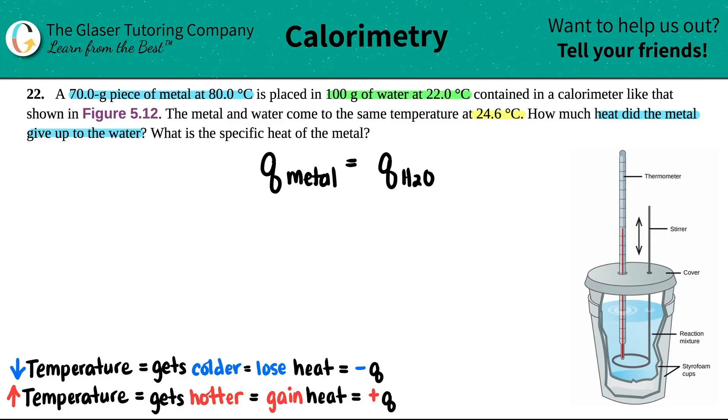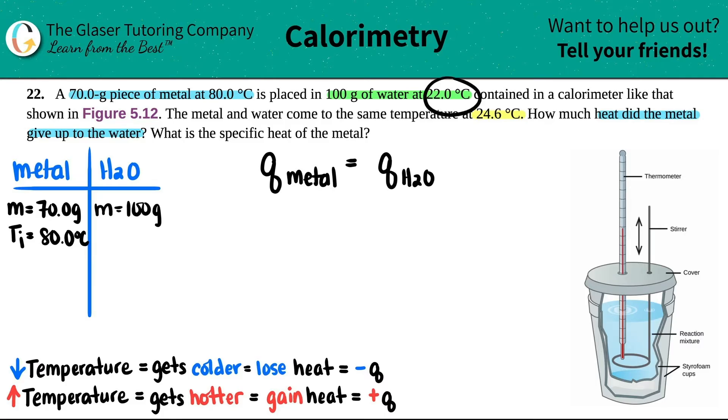That's how we're going to figure that out, is just do a little chart. I'm going to say that I have metal and then I do this little chart here and we got H2O. Now I just list out whatever they told me. They told me that the metal was 70 grams, so I'm going to say that that's an m, so that's 70.0 grams. And the metal was at 80 degrees Celsius, so that was its initial temperature, so Ti for the metal was 80 degrees Celsius. And now they told us that for the water, the mass was 100 grams and the water was at 22, right? That's the initial temp.